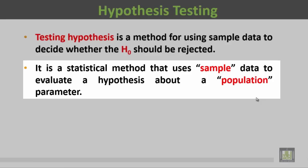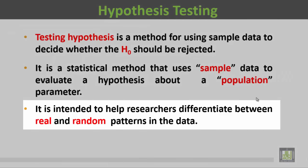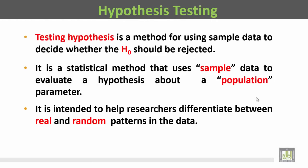هي طريقة إحصائية تستخدم بيانات العينة لتقييم فرض حول مواصفات المجتمع. It is intended to help researchers differentiate between real and random patterns in the data. وهي مقصود بها أن تساعد الباحثين أن يفرقوا بين النمط الحقيقي والنمط العشوائي في البيانات.